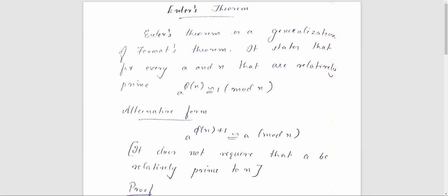Today we will be discussing Euler's theorem and its proof. Euler's theorem is a generalization of Fermat's theorem, which we have discussed in previous videos. Fermat's theorem states that a raised to p-1 is congruent to 1 mod n.